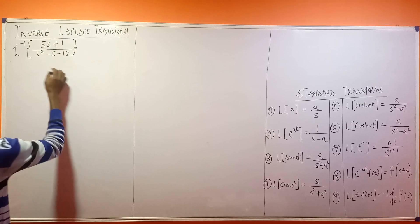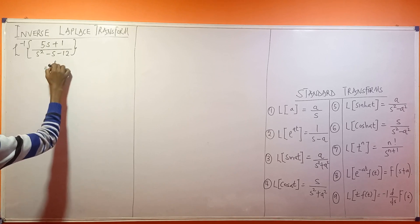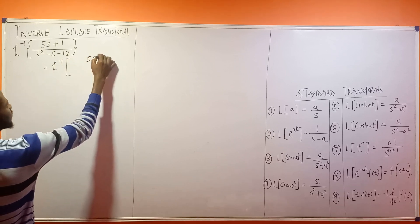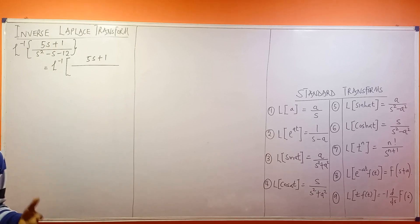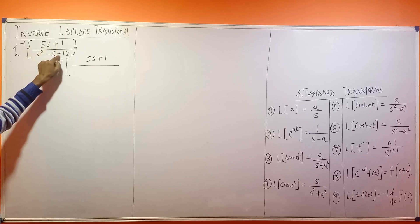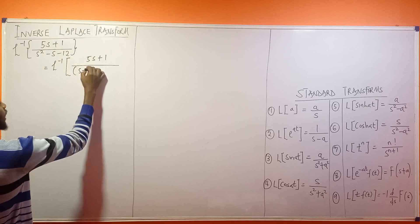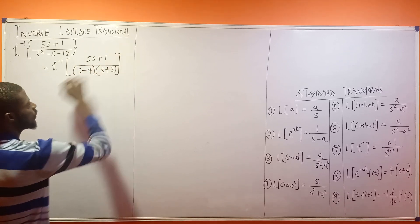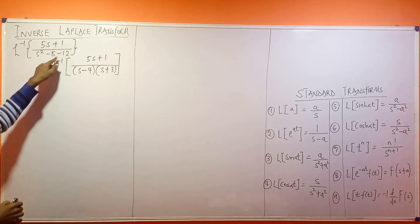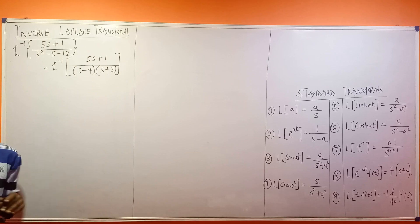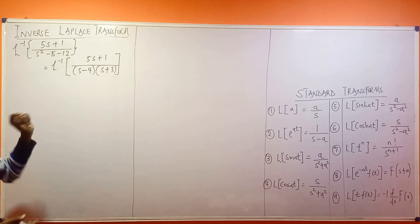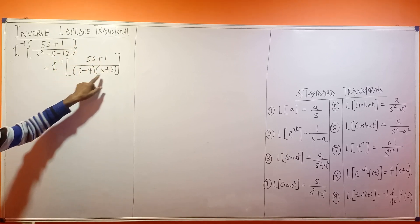This will be equal to the inverse Laplace transform of (5s + 1) divided by (s² - s - 12). Ask yourself: can we factorize this denominator? That's the first thing you look at in partial fractions — the denominators tell you how many individual fractions you'll have. So s² - s - 12 factorizes to (s - 4)(s + 3), because -4 and +3 multiply to -12 and add to -1.